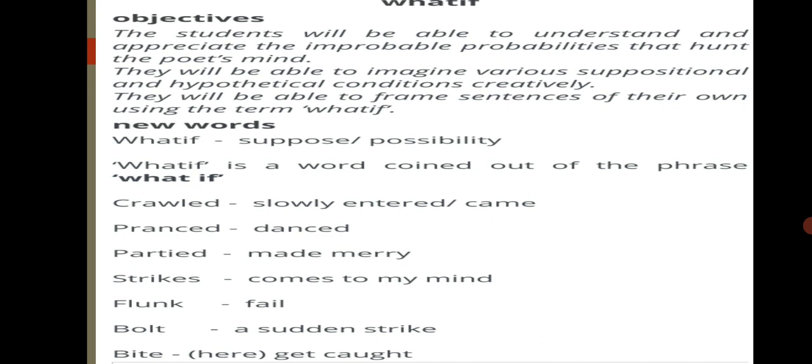You will be able to frame sentences of your own using the term 'what if.' So 'what if' means suppose or possibility. It is a word coined out of the phrase 'what if.' Now let us see the meaning of a few words: crawled means slowly entered or came, pranced means danced, partied means made merry, strikes means comes to my mind, flunk means to fail, bolt means a sudden strike, and bite here means to get caught.